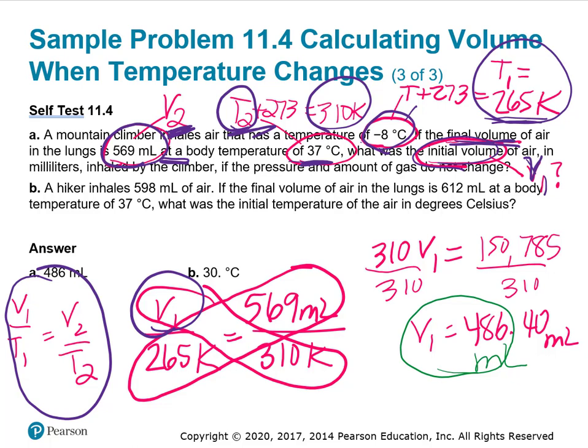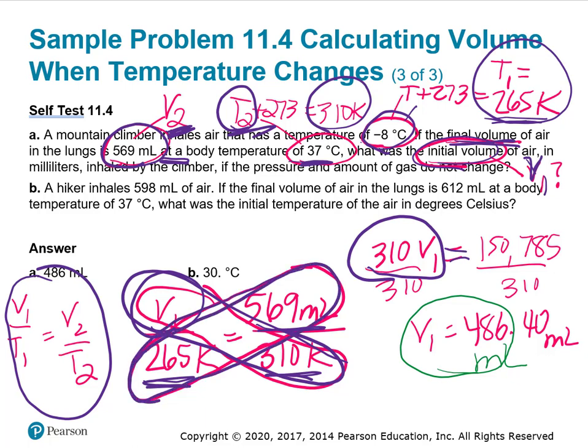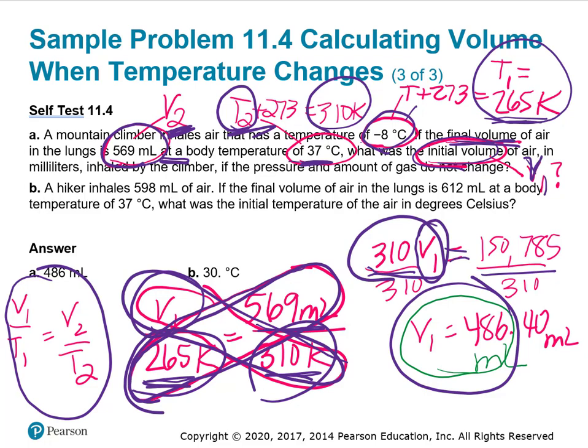Setting up V1 over T1 equals V2 over T2. My V1 is the question mark, that's T1, this is V2, this is T2. I cross-multiplied. 310 times V1 equals 569 times 265, which is 150,785. To get V1, divide both sides by 310, giving 486 milliliters with three significant figures. Let's double-check. Temperature increased, so volume should increase. Started with 485, increased to 569. That makes sense.